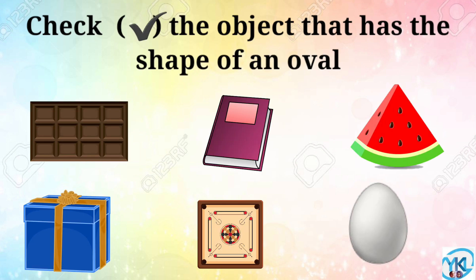Check the object that has the shape of an oval. The egg has the shape of an oval. Wow, excellent. The egg has the shape of an oval.